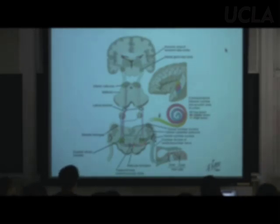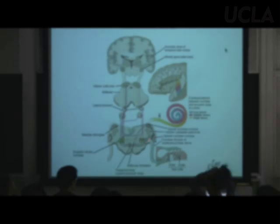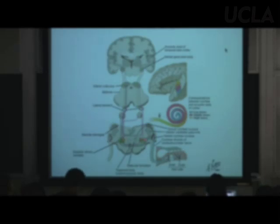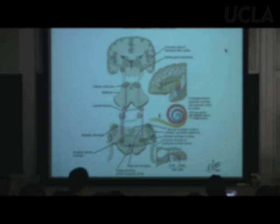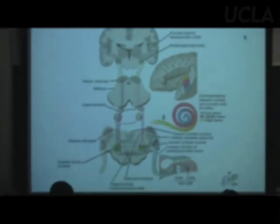The trapezoid body is in the metencephalon. The first synapse after the cochlear nuclei in this pathway is in something called the superior olive, or superior olivary complex.